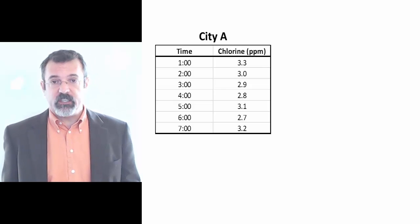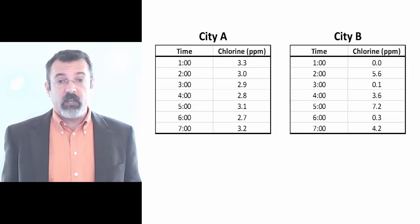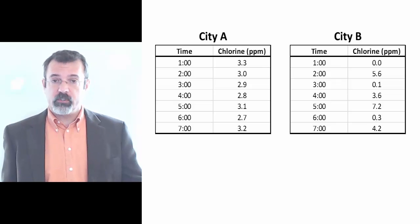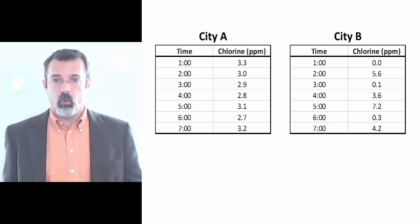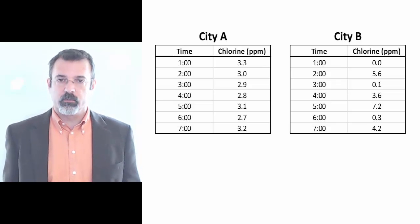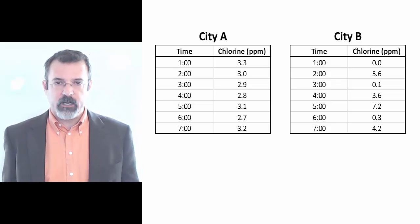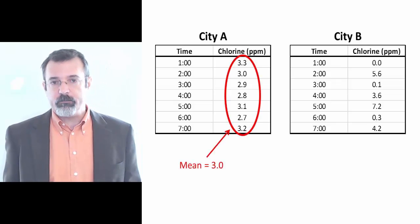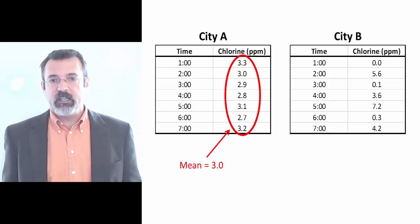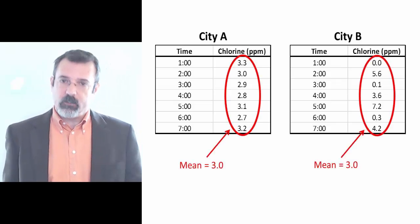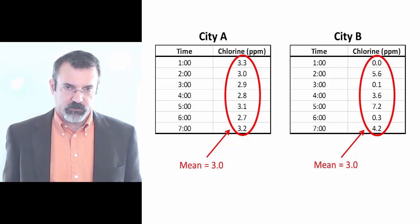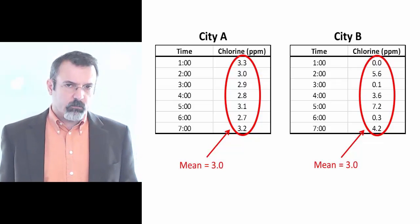We're going to look at two cities and ask whether they have an adequate quantity of chlorine in the water to kill the bacteria. We take a sample every hour from each city and record the quantity of chlorine. Over the course of the day, the quantity varies, but both city A and city B average three parts per million. However, the numbers look markedly different.